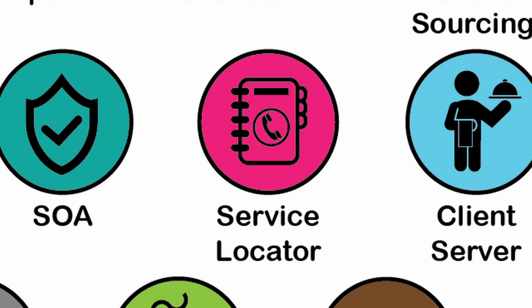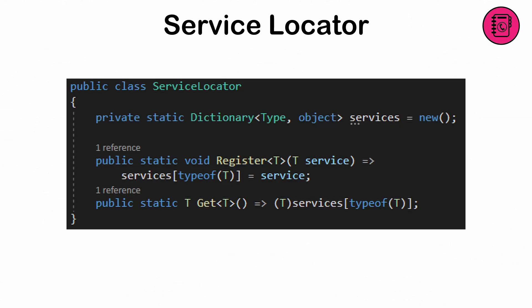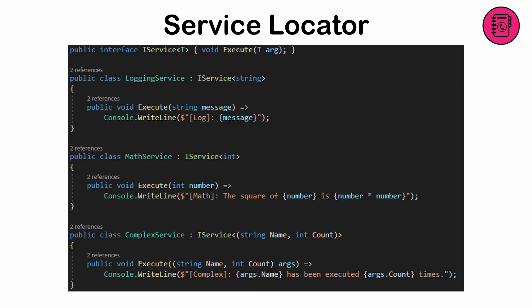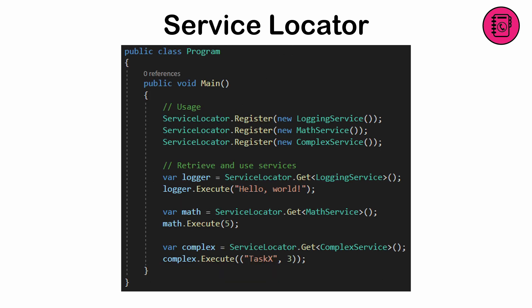The service locator pattern. A way to centralize access to services by registering them in a global repository called a locator. This pattern is used when you need loose coupling between services and their consumers. By using generics and the singleton pattern, we can effectively use the locator to call any service from anywhere, provided it's been registered. The trade-off is that this can be harder to debug due to hidden dependencies and encourages global state, making unit testing more difficult.